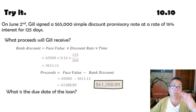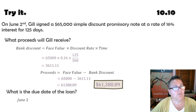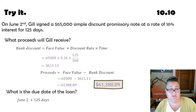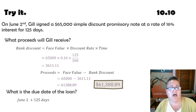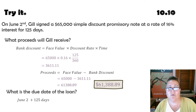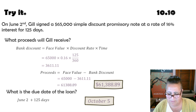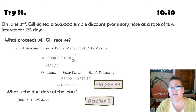The due date: starting on June 2nd and adding 125 days gives June 127th. June has 30 days, so that's the 97th. July has 31 days — that's the 66th. August also has 31 days — that's the 35th. September has 30 days, so September 35th becomes October 5th. I would probably use the days-in-the-year chart for a 125-day calculation.